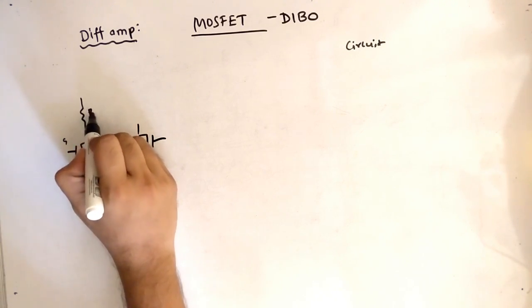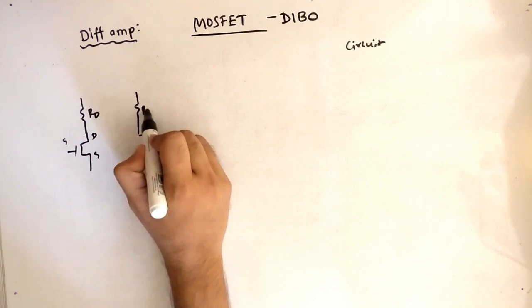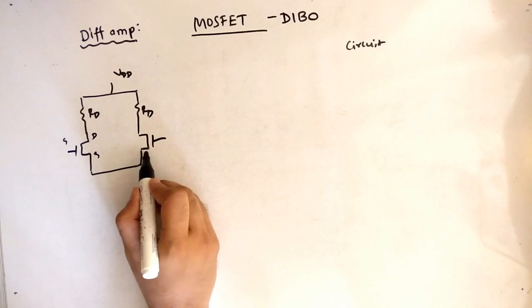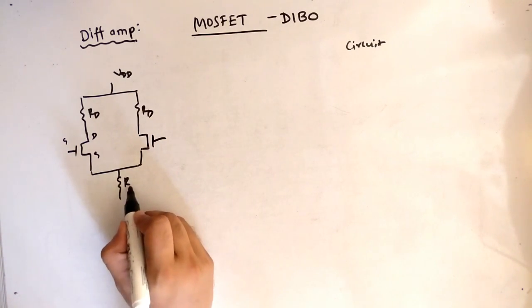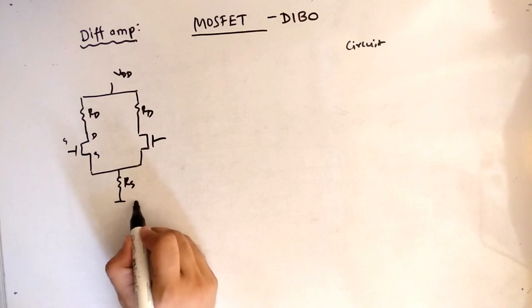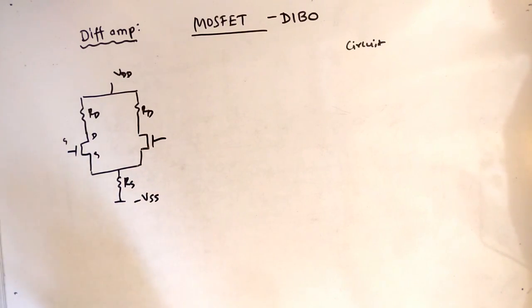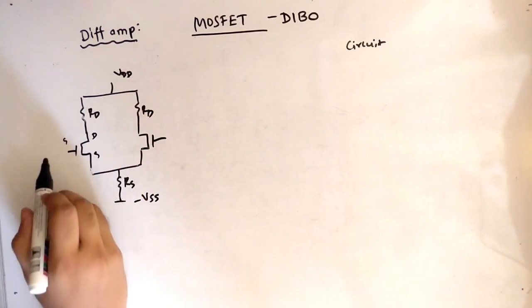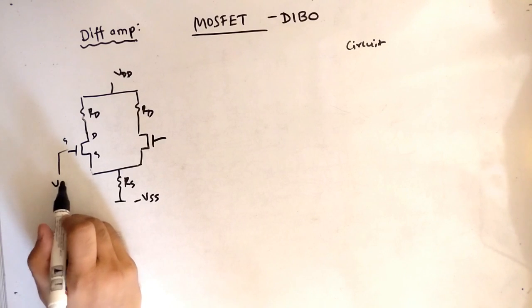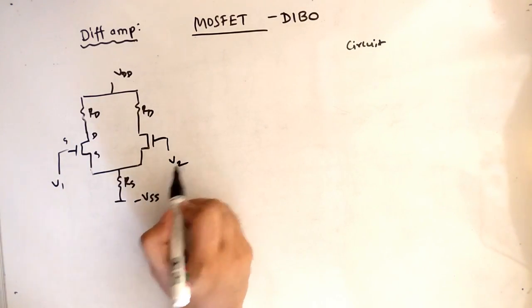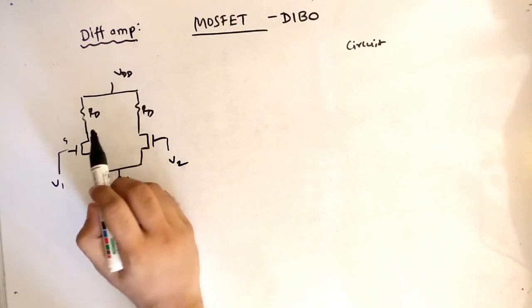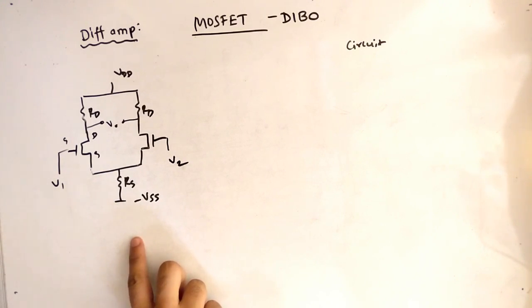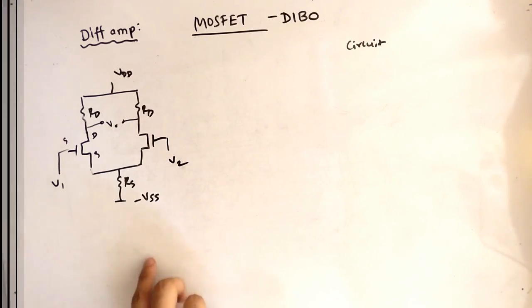Now we draw the resistances. The upper side has RD resistance with supply voltage VDD. On the source side, the two MOSFETs share a common resistance RS, with voltage minus VSS at the lower end. So we have VDD on top, minus VSS at the bottom, two RD resistances, two MOSFETs, and dual inputs V1 and V2. The output is balanced — this completes the circuit.